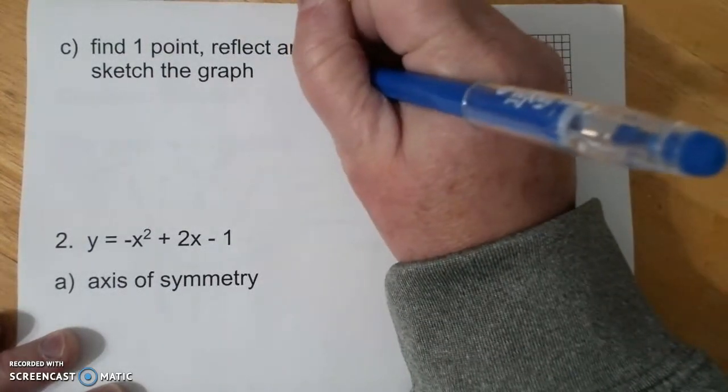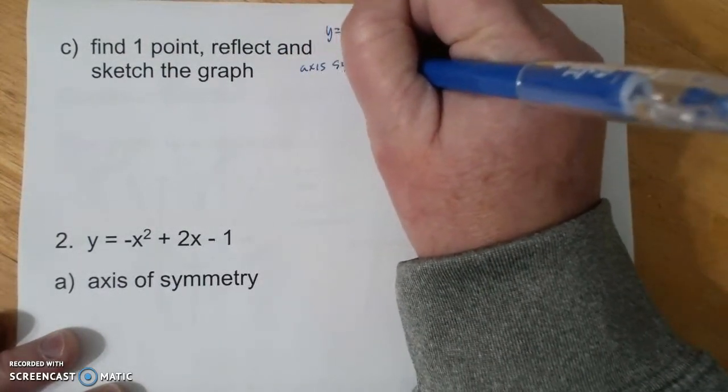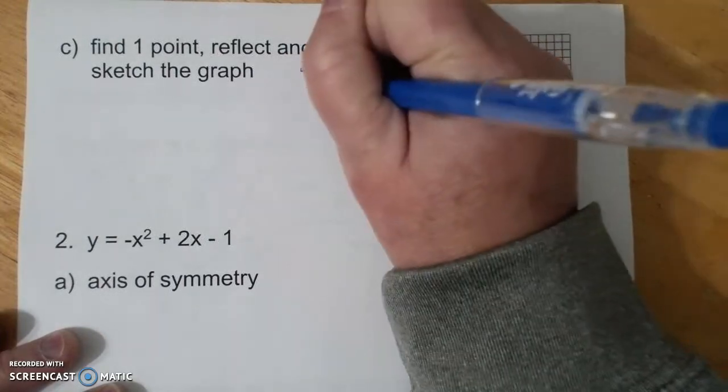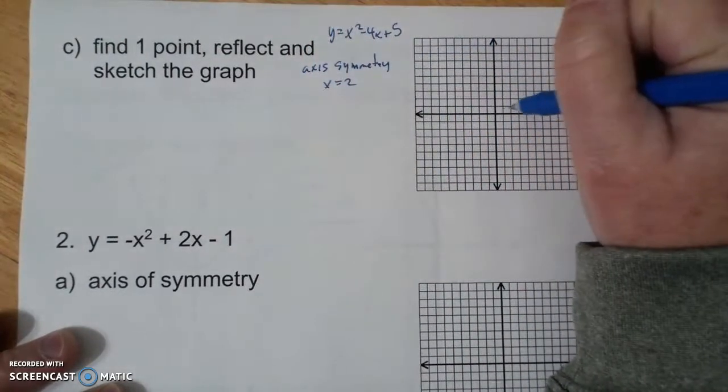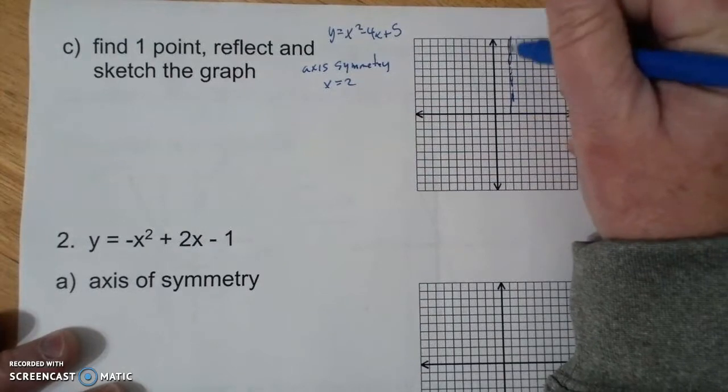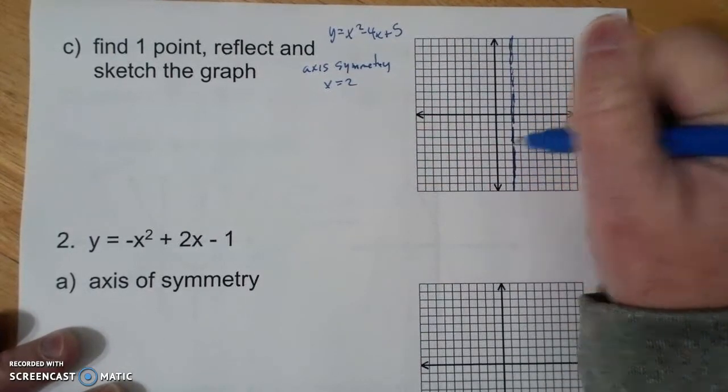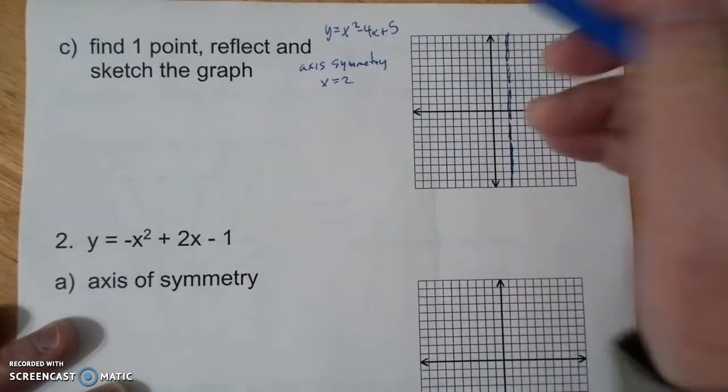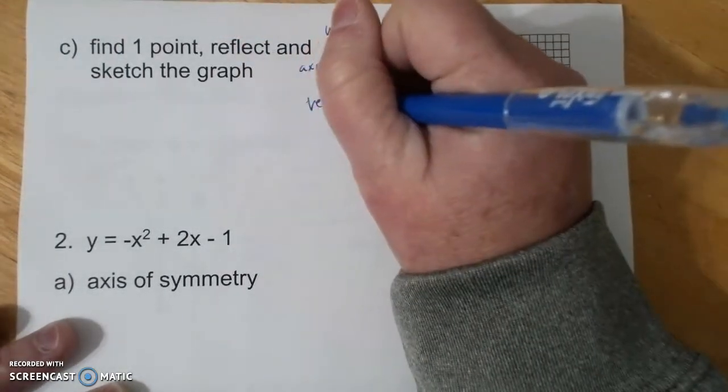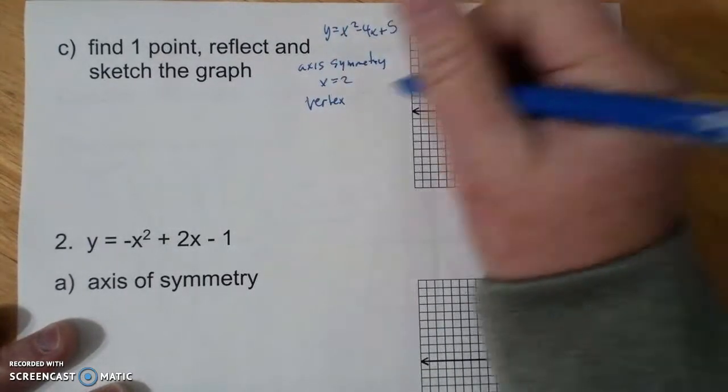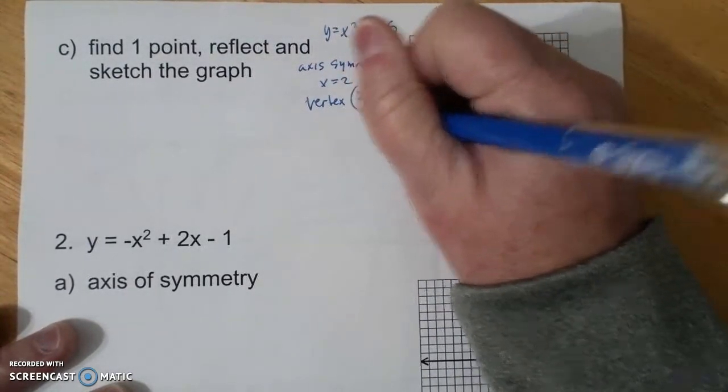We already knew that the axis of symmetry was at x equals 2. I kind of usually just make a scratchy, squiggly line. I also know that my vertex was at 2 comma 1.